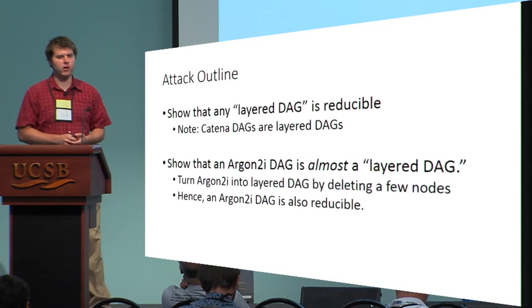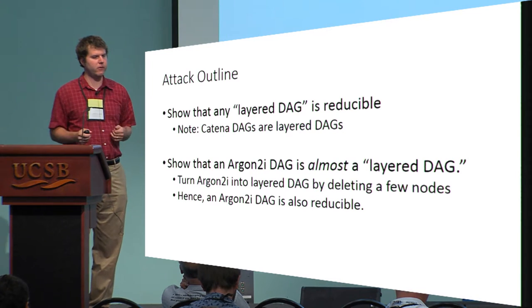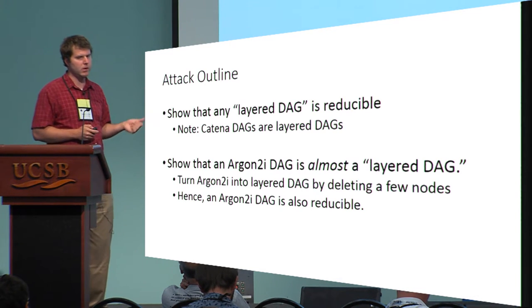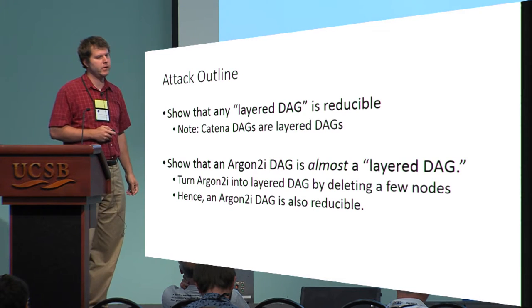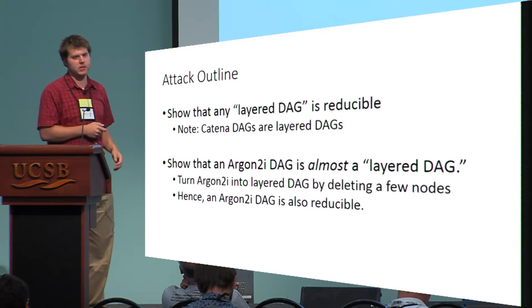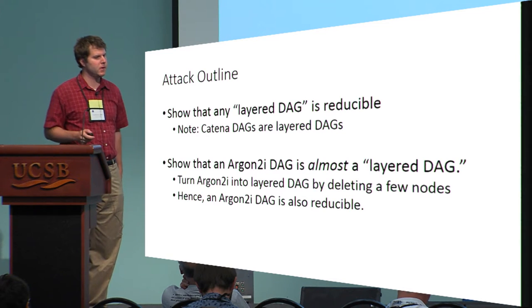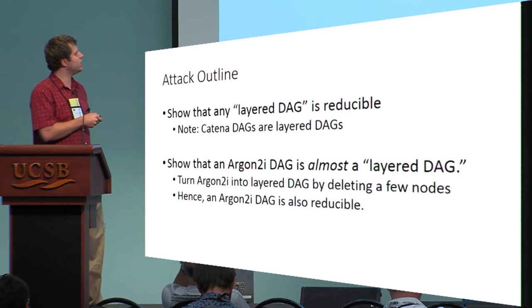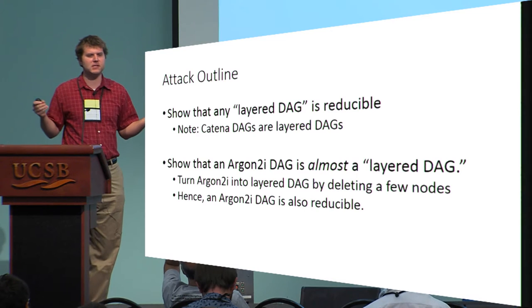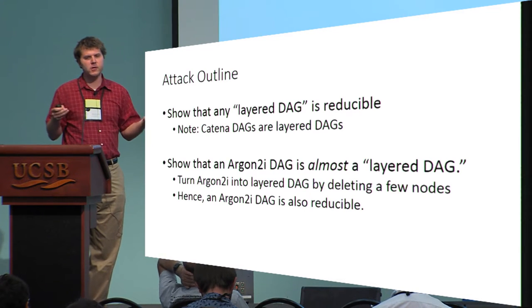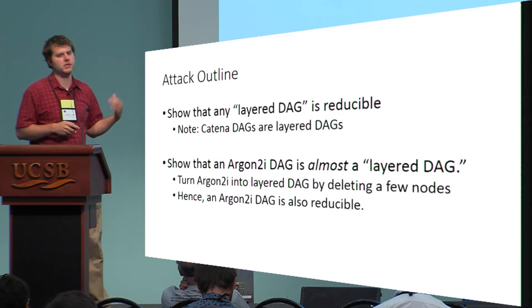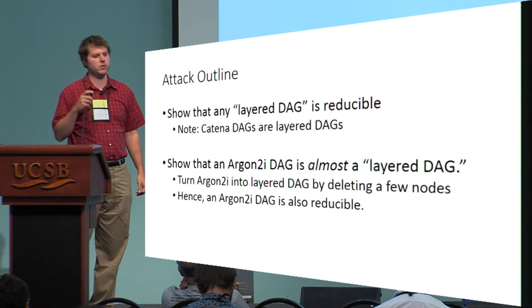Here's a brief outline of the attack. First we show that any layered graph is reducible — I'll define layered graphs next. This shows that we can attack Catena because Catena DAGs are layered DAGs. Then we'll show that an Argon2i DAG is almost a layered DAG, in the sense that we can remove just a few nodes and the resulting graph is a layered DAG — hence Argon2i DAGs are also reducible.